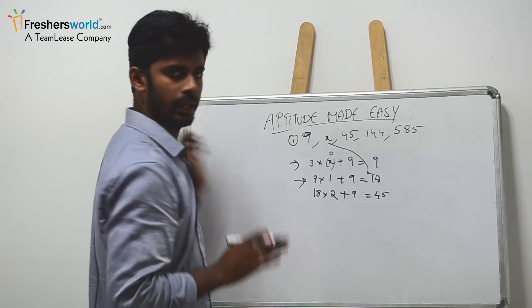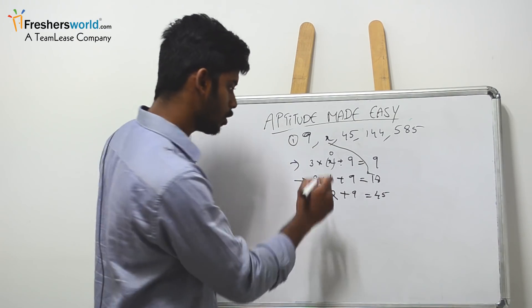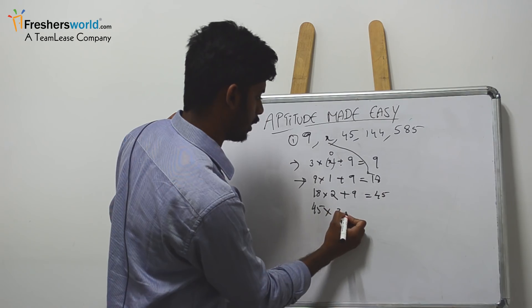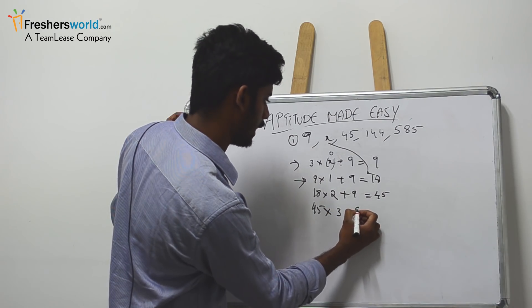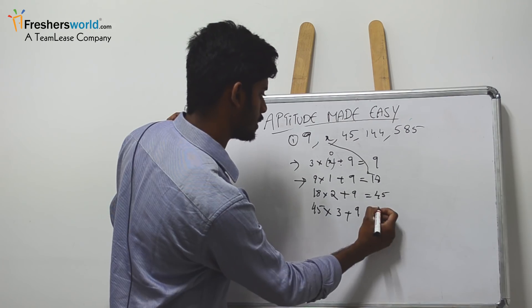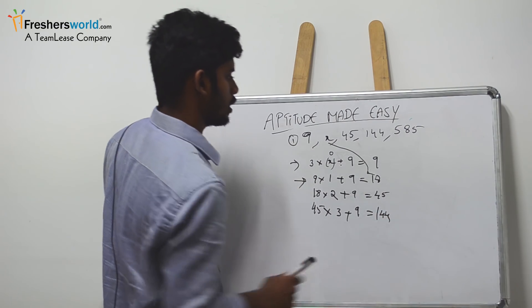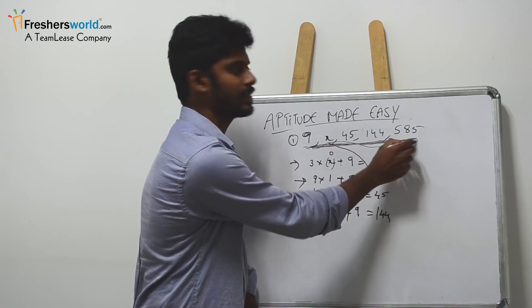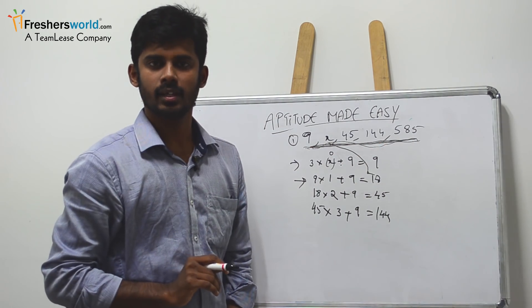So we got the third number. In order to check it again, let's go for the next one: 45 into 3 which is 135, plus again 9, so it's 144. This is how we cracked this kind of problem.